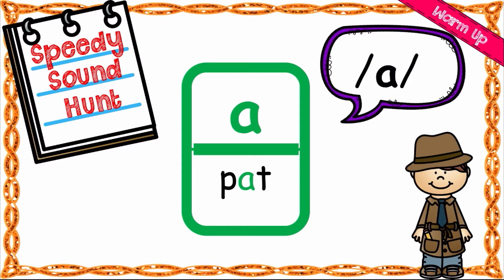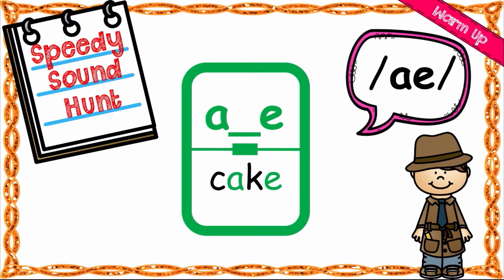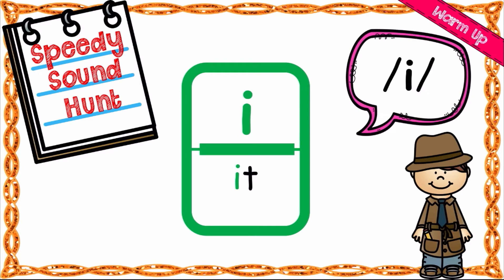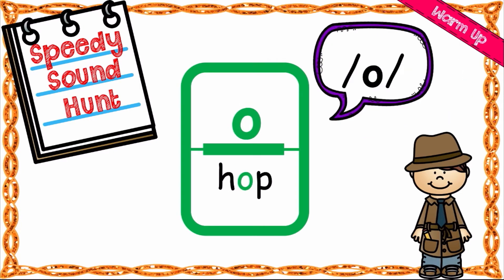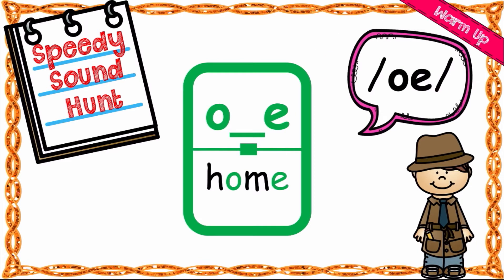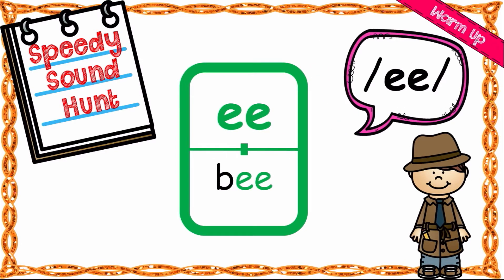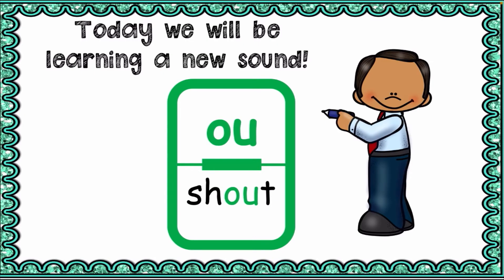Next we have the 'uh' sound as in 'but.' We have the 'a' sound as in 'part,' the 'a' sound as in 'cake,' the 'i' sound as in 'bite,' the 'e' sound as in 'eat,' the short 'o' sound as in 'hop,' and the 'o' sound as in 'bone.' Now we have the 'ow' sound — today we'll be learning the new sound: ow!